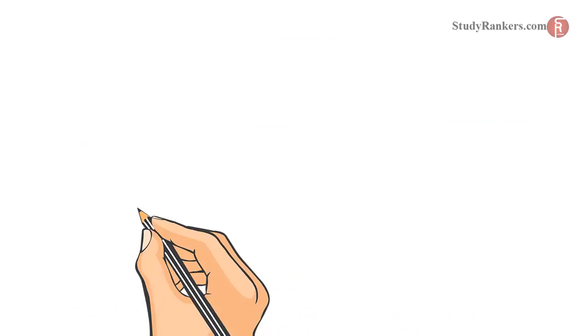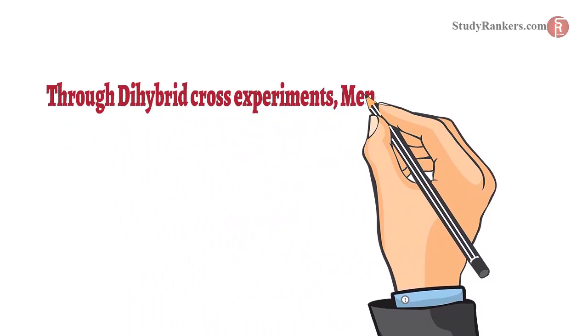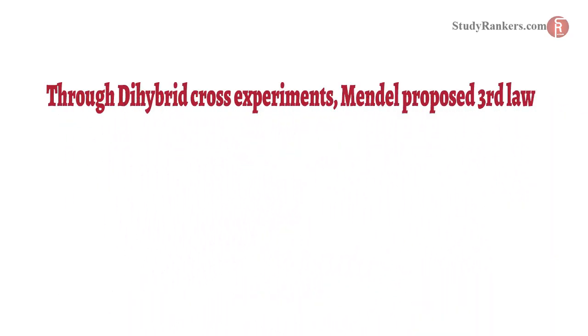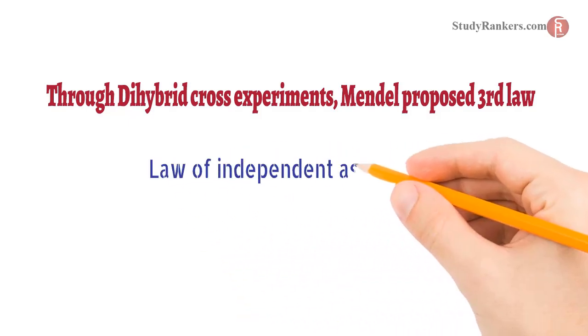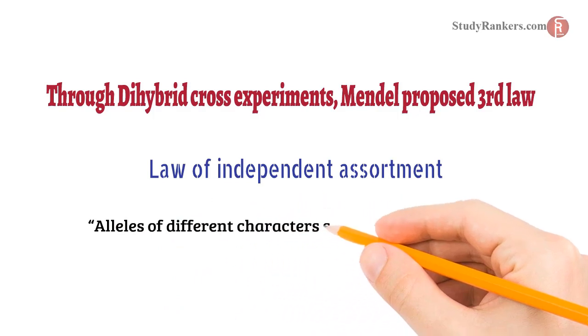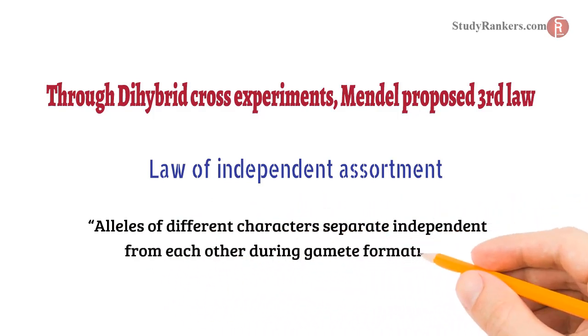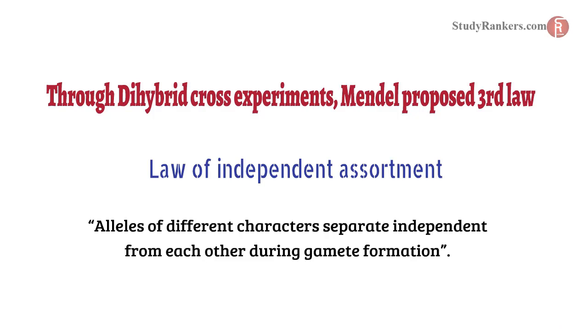Through dihybrid cross experiments, Mendel proposed the third law: the Law of Independent Assortment. It states that alleles of different characters separate independently from each other during gamete formation.